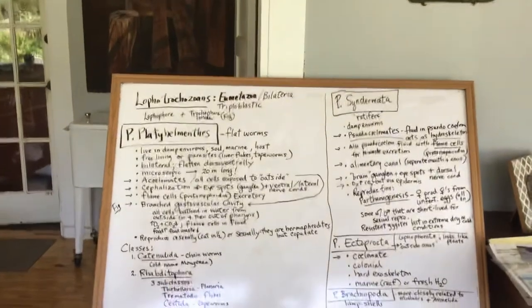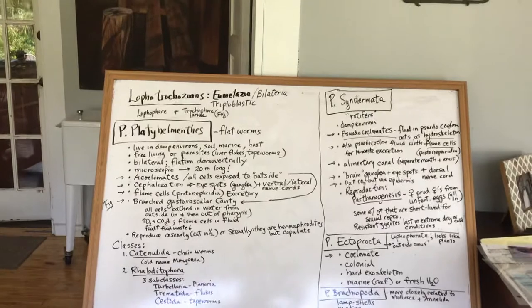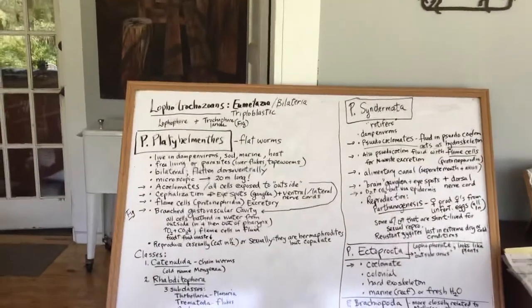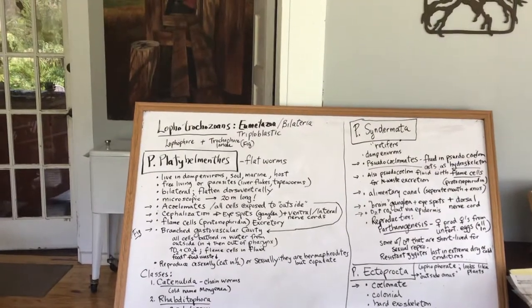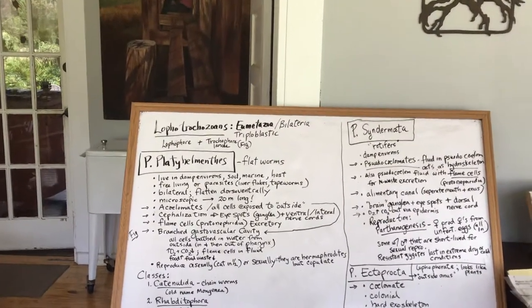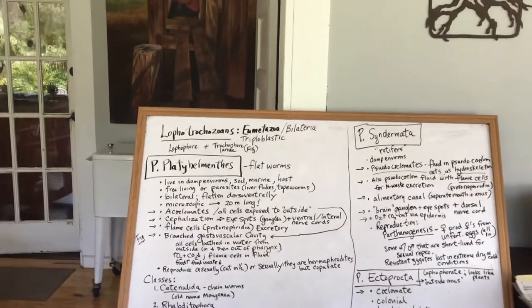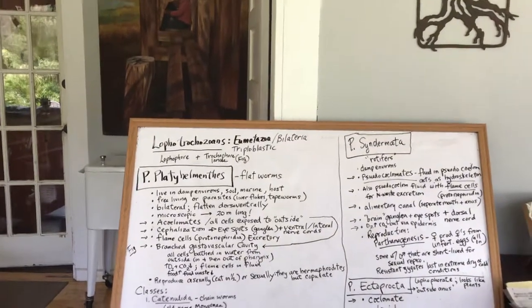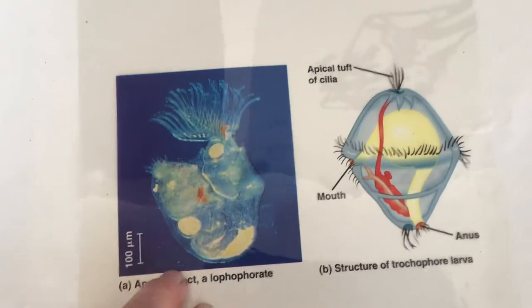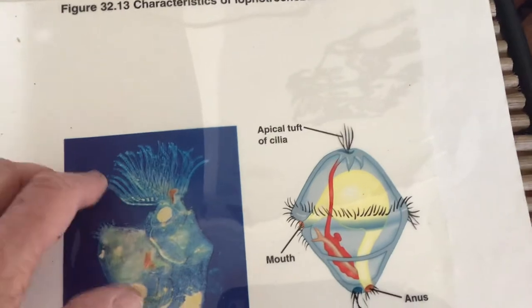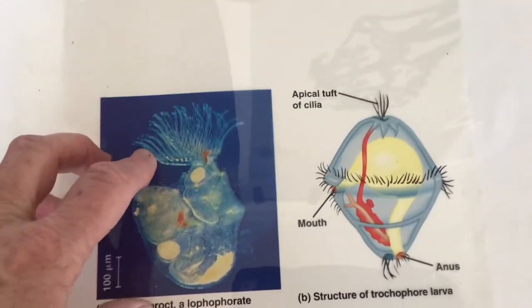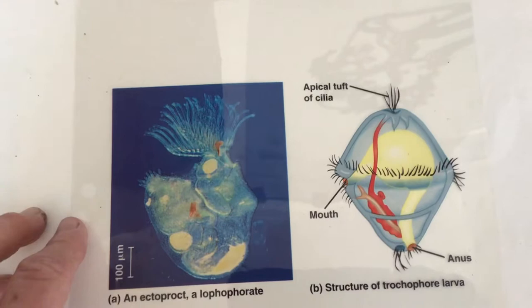Everything from now on will be all of those things. The Lophotrochozoan group is based on what is known as a lophophore and a trochophore larva. A lophophore has comb-shaped tentacles or extensions at the top of their bodies, and this is for filter feeding.